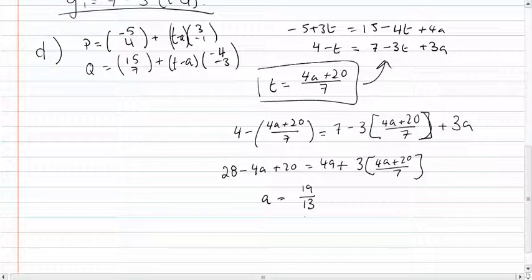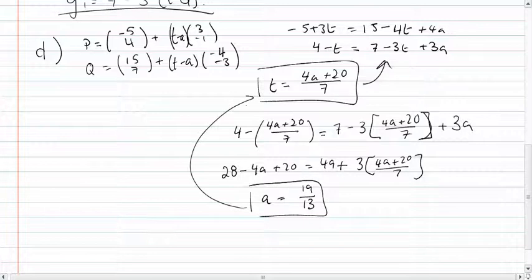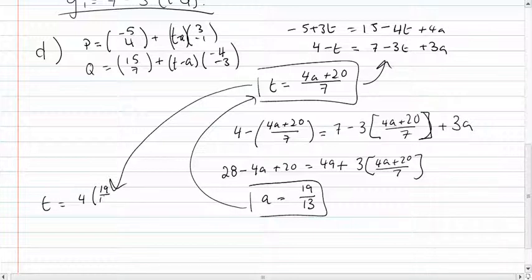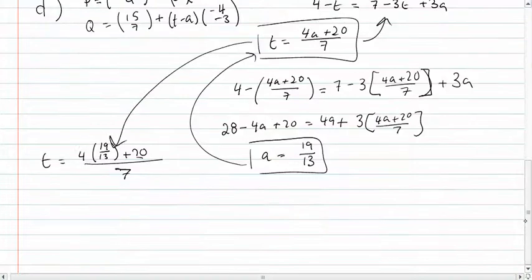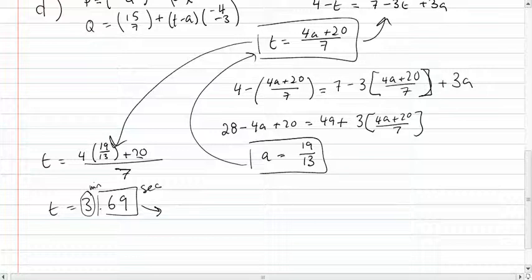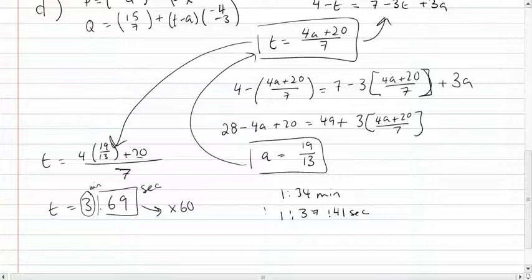After this, we plug A back into T here. T equals 4 into 19 over 13 plus 20 over 7. You find that this gives you 3.69. We know that 3 is in minutes and 0.69 is in seconds. So we're going to turn this to minutes and multiply it by 60. We add the value that we get here to the initial value of 1 hour and 34 minutes. We get 1 hour 37 minutes and 41 seconds. This is the time of the explosion.